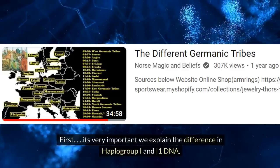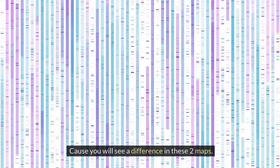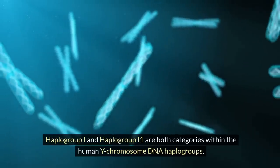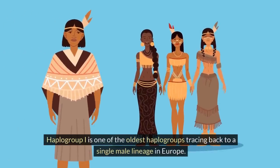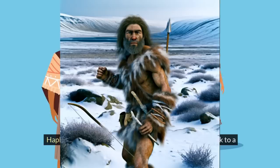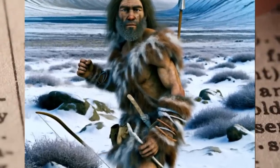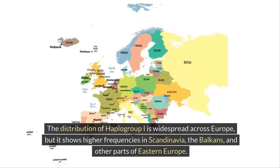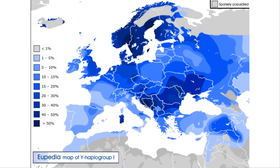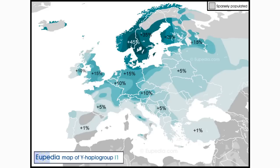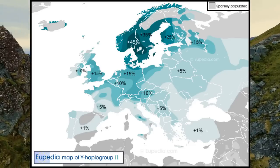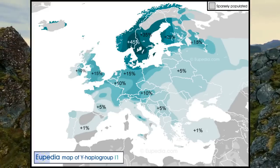It's very important we explain the difference between haplogroup I and haplogroup I1, because you will see a difference in these two maps. Haplogroup I and haplogroup I1 are both categories within the human Y chromosome DNA haplogroups. Haplogroup I is one of the oldest haplogroups, tracing back to a single male lineage in Europe, believed to have originated 25,000 to 30,000 years ago, with widespread distribution but higher frequencies in Scandinavia, the Balkans, and parts of Eastern Europe. Haplogroup I1 is a much younger subclade, with its highest frequencies in Scandinavia, closely associated with Germanic populations.